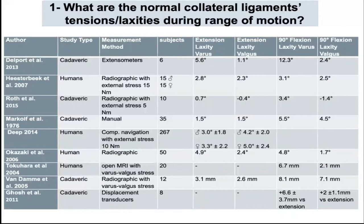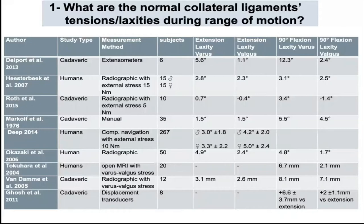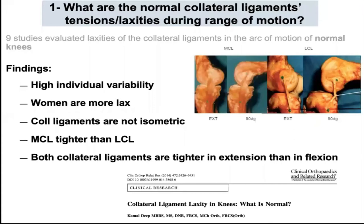Reviewing the literature, several studies have evaluated the tension of the collateral ligament in the arc of motion of normal knees, using different protocols and methods to assess ligament behavior. From all these studies, we can conclude that tension of the collateral ligament is subjected to individual variability. There is more laxity in females. They are not isometric throughout the arc of motion. The MCL is tighter than the LCL, and they are more tight in extension than in flexion.